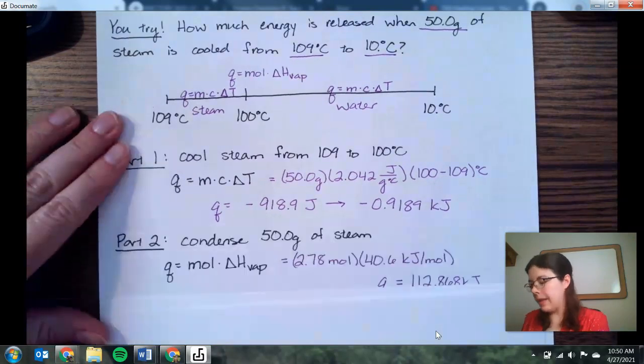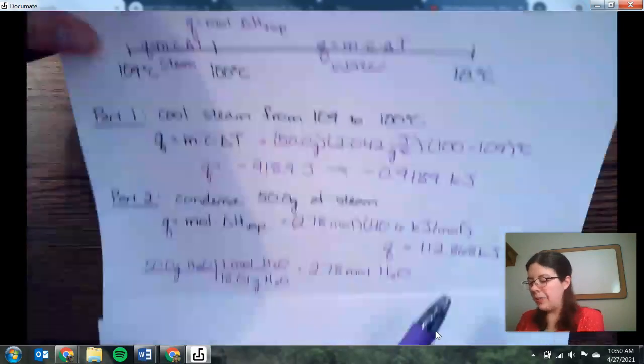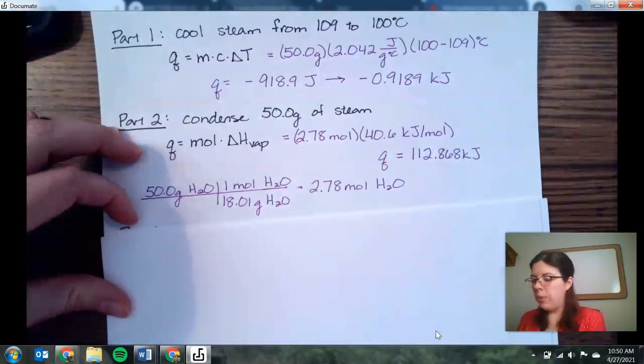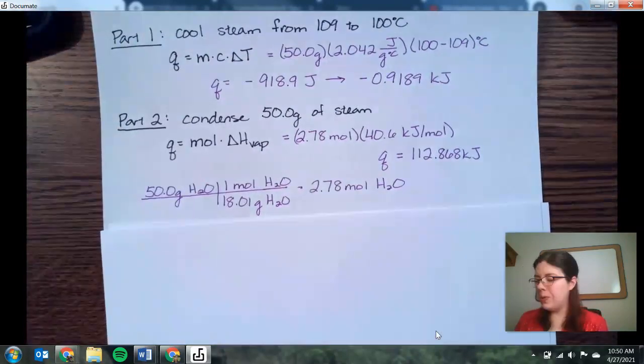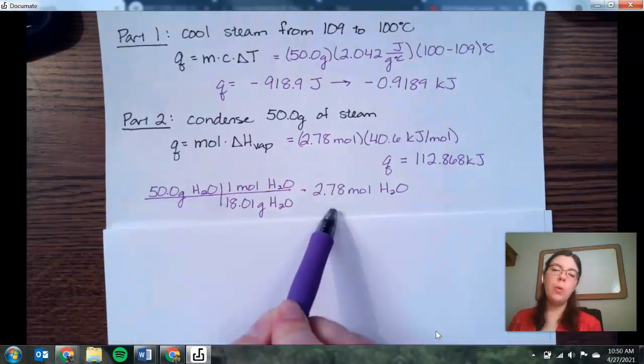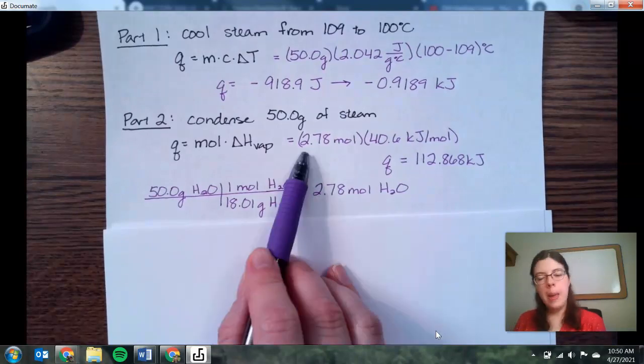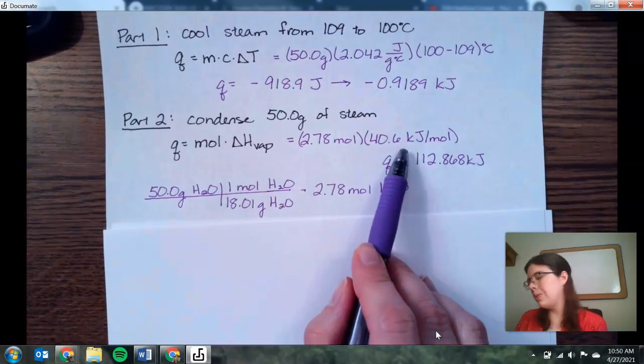The next step, we are having that phase change occurring, so we have to use that secondary equation. So we need to know the number of moles. We find the number of moles by converting using molar mass. So 50 grams divided by 18.01 gives us 2.78 moles of water. So we plug that into our equation. Make sure you use the delta H of vaporization, it's going to be the bigger of the two numbers in your notes. That gives you 40.6 kilojoules.